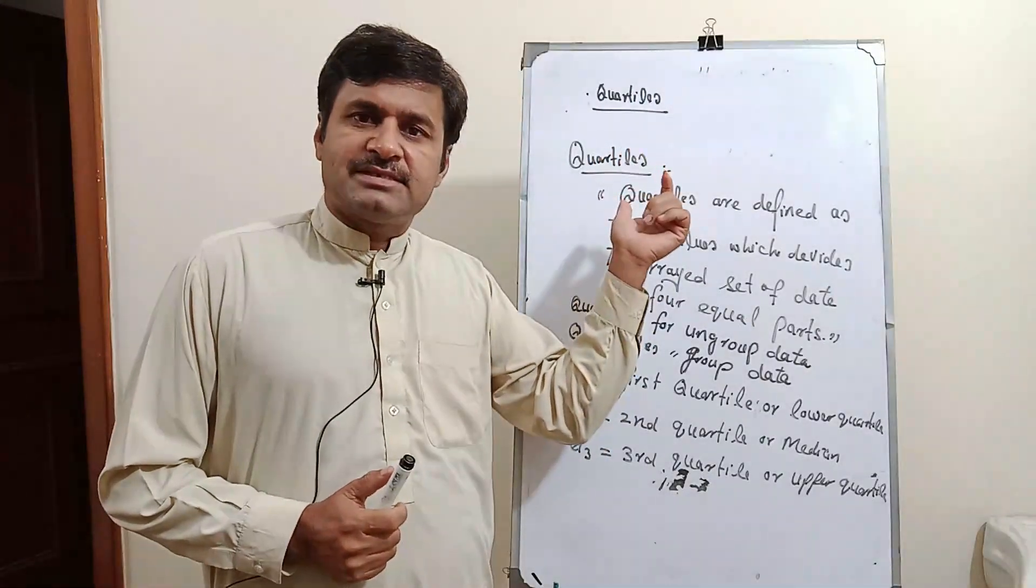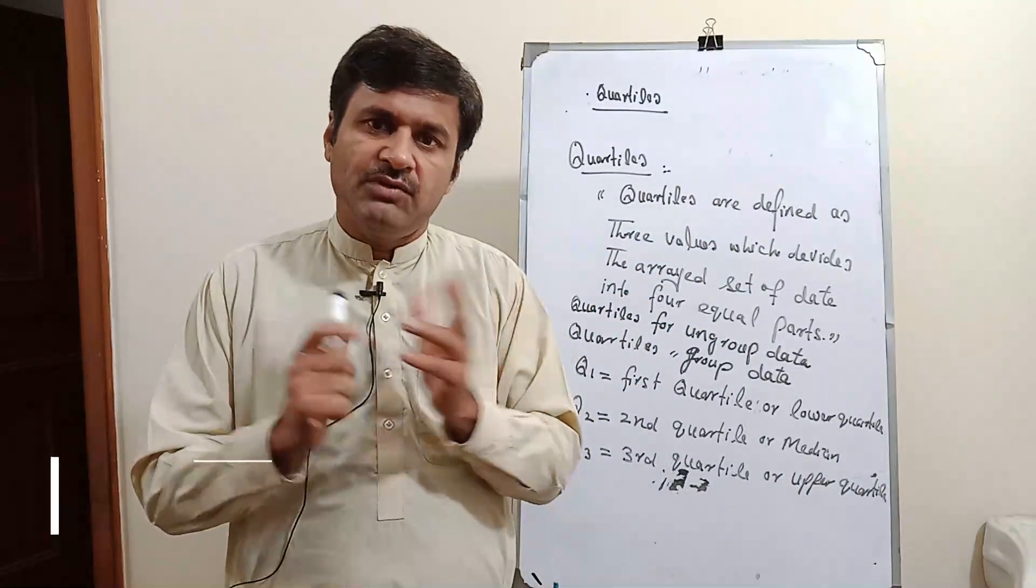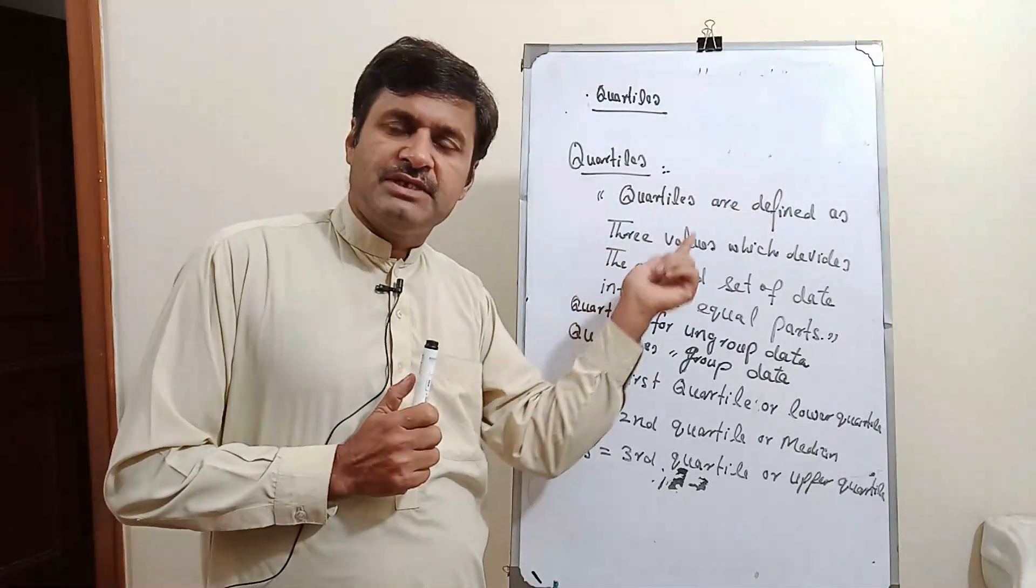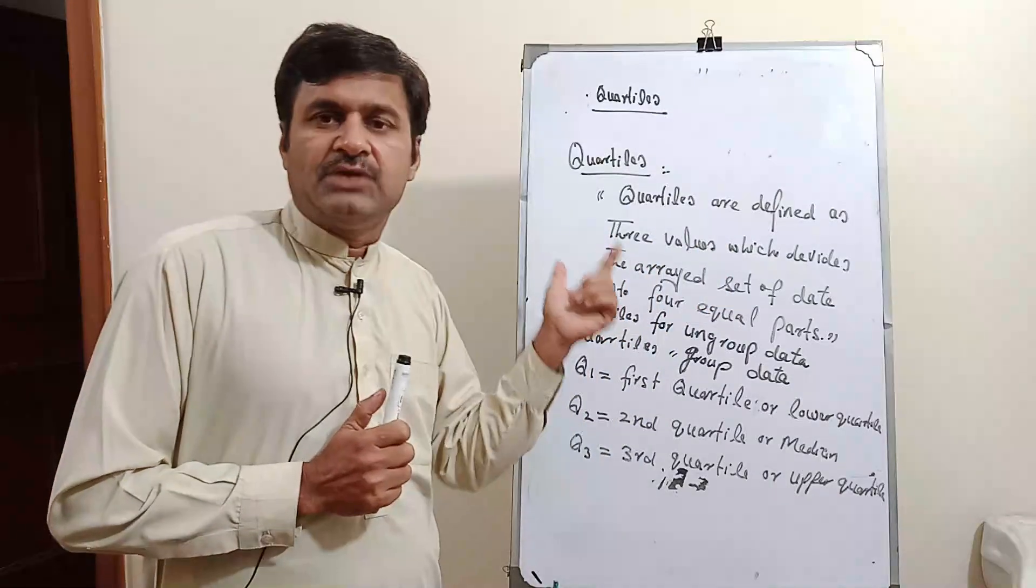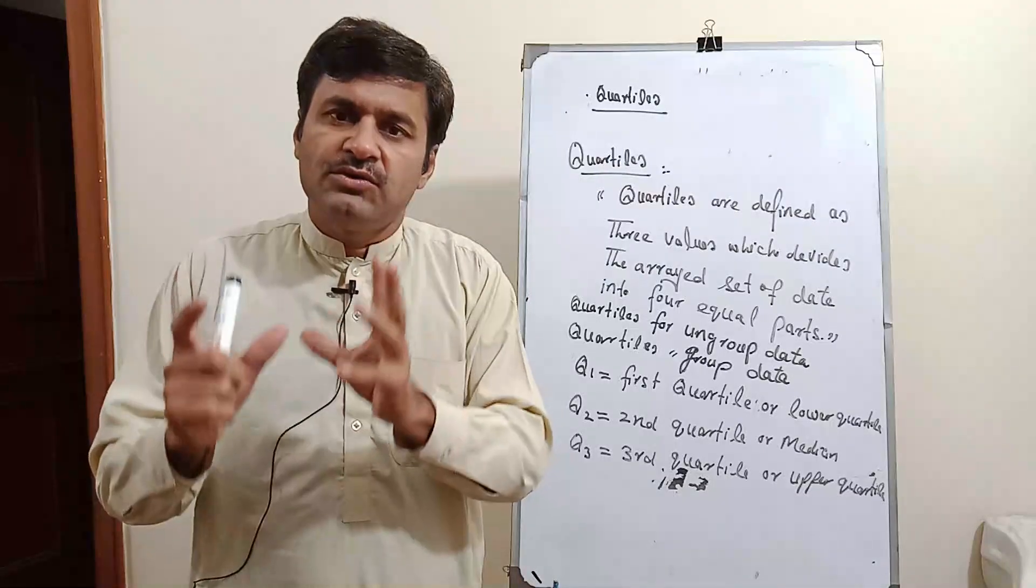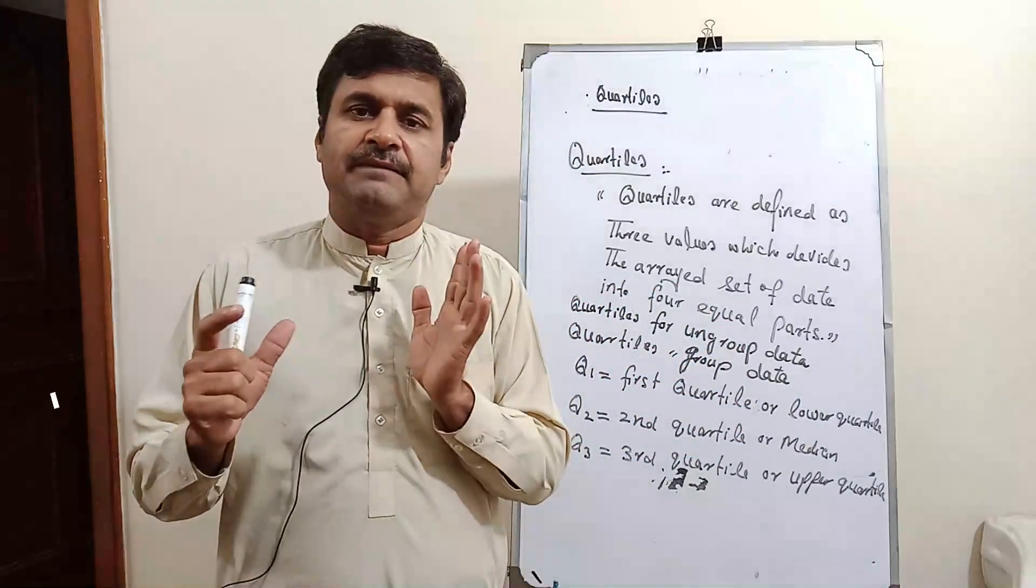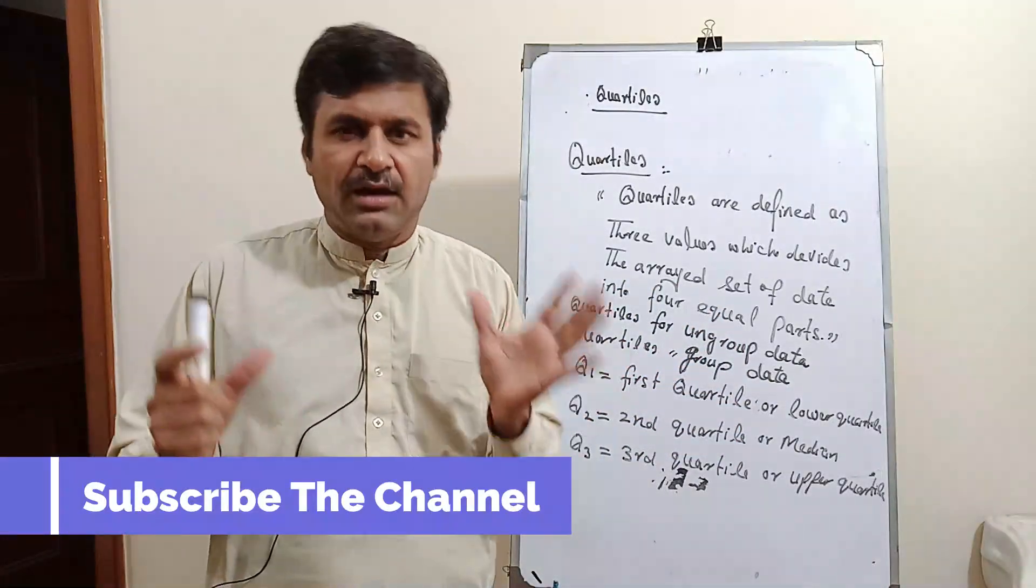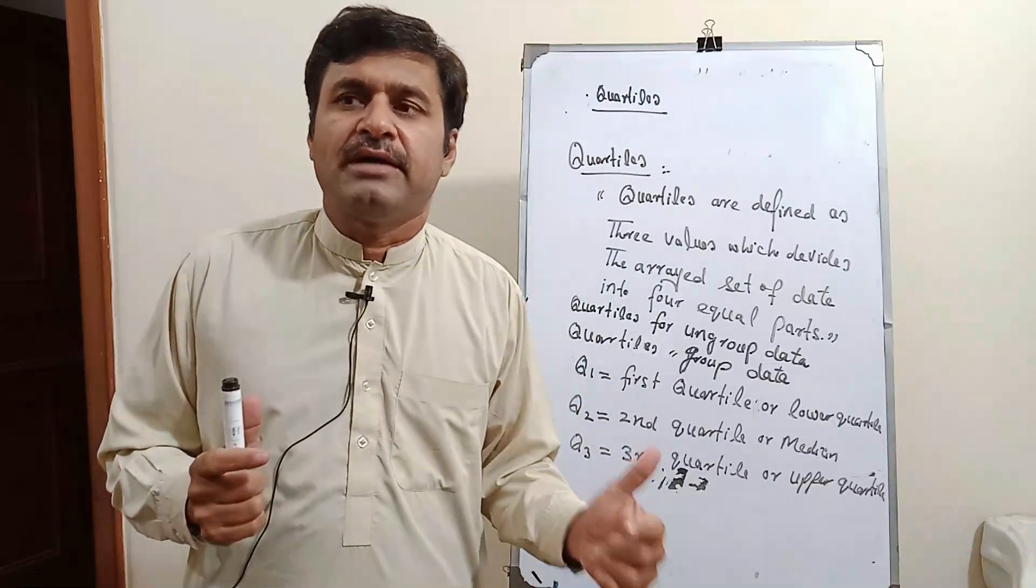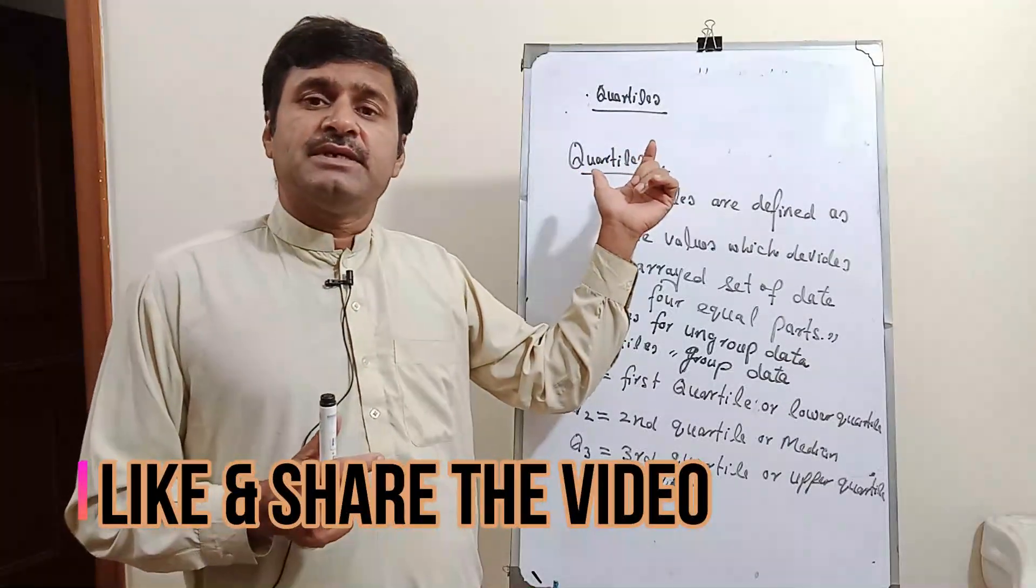Quartiles are defined as three values which divide a raw set of data into four equal parts. It is denoted as q1, q2, and q3, where q1 is equal to first quartile or lower quartile, q2 is equal to second quartile or median, and q3 is equal to upper quartile or third quartile.